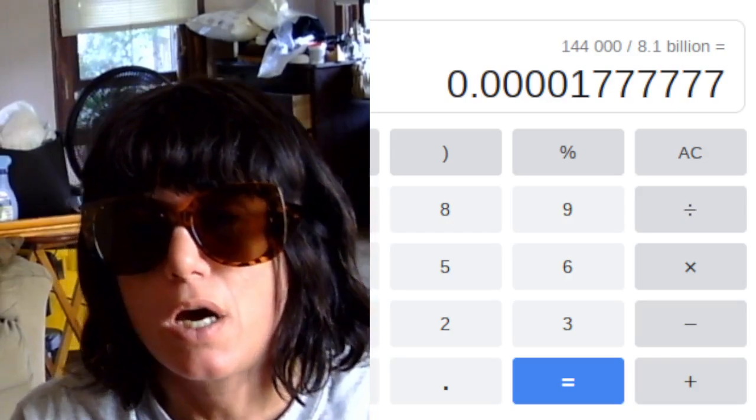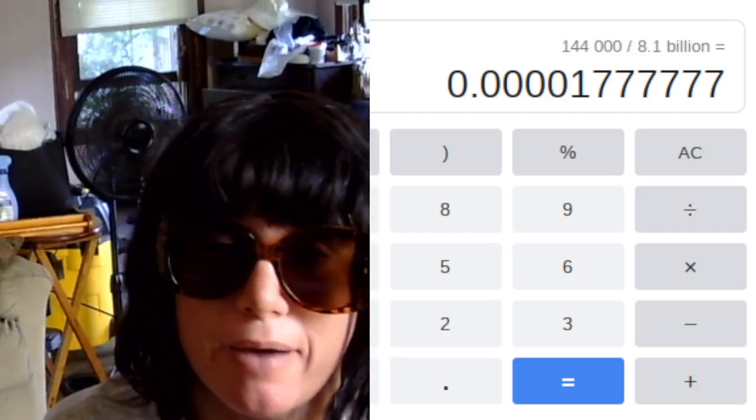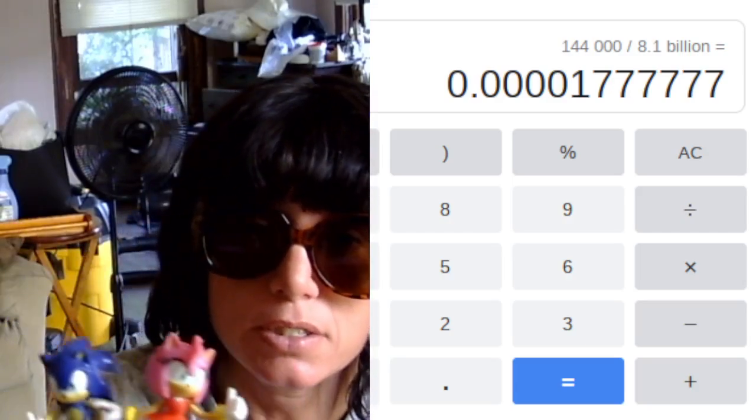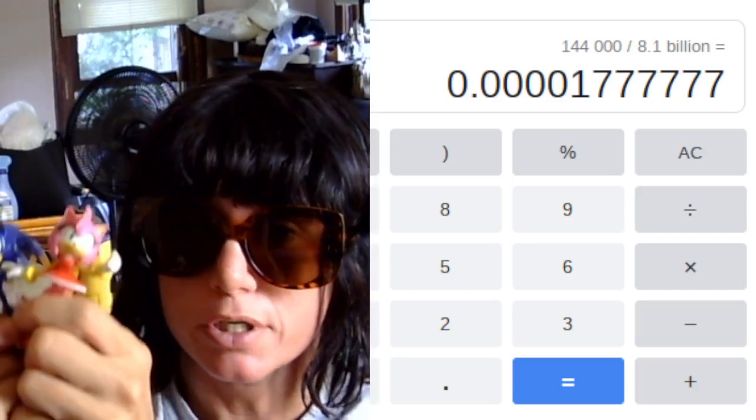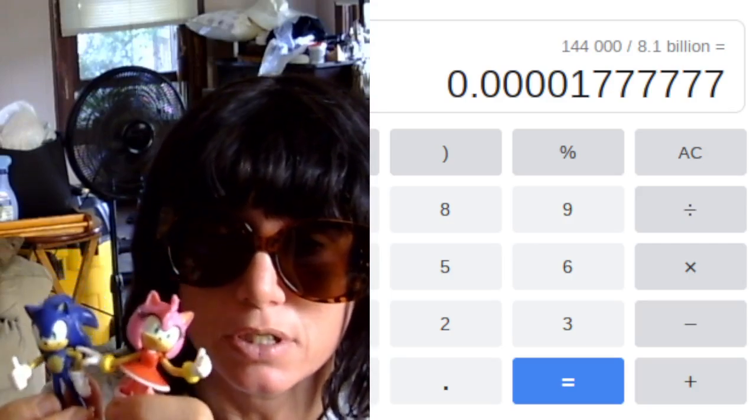Now, when it comes to one person in the relationship having more authority. First of all, okay, this is Amy and this is Sonic here. They are a team. They work together. They have the same goal. So having two leaders in this case is good.